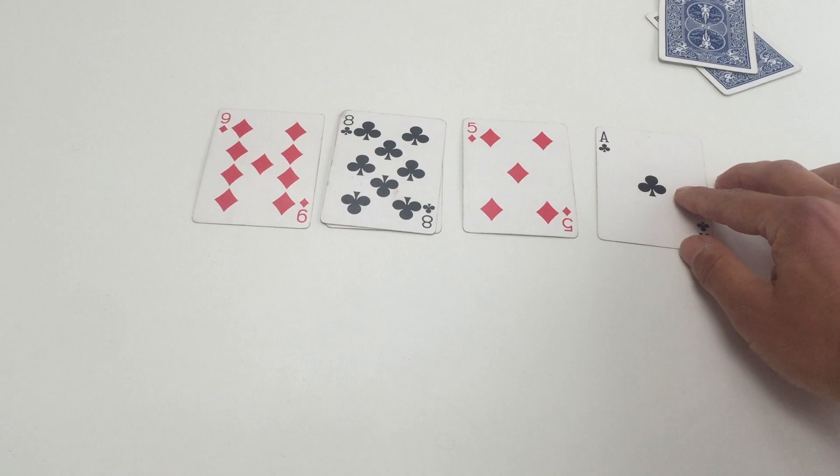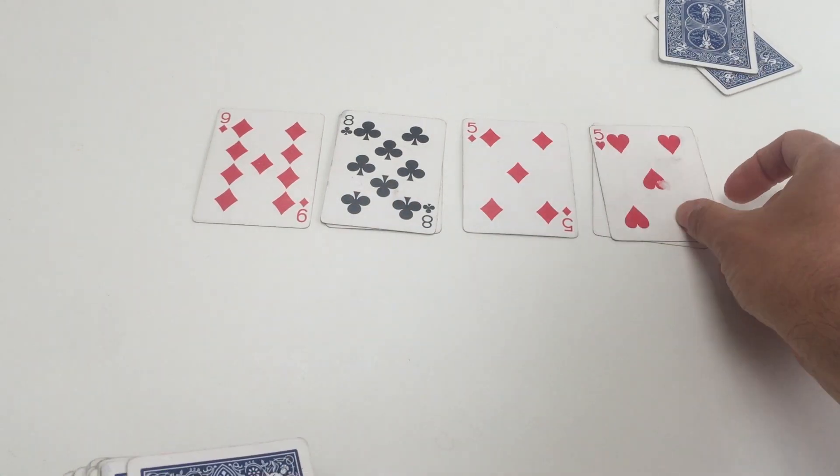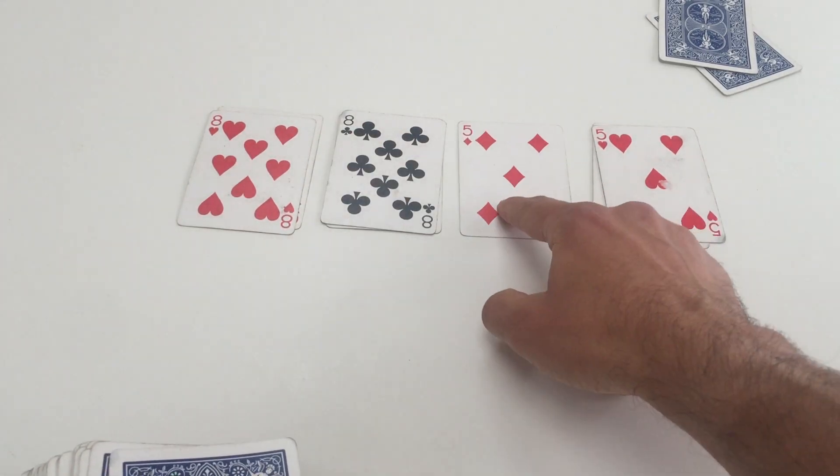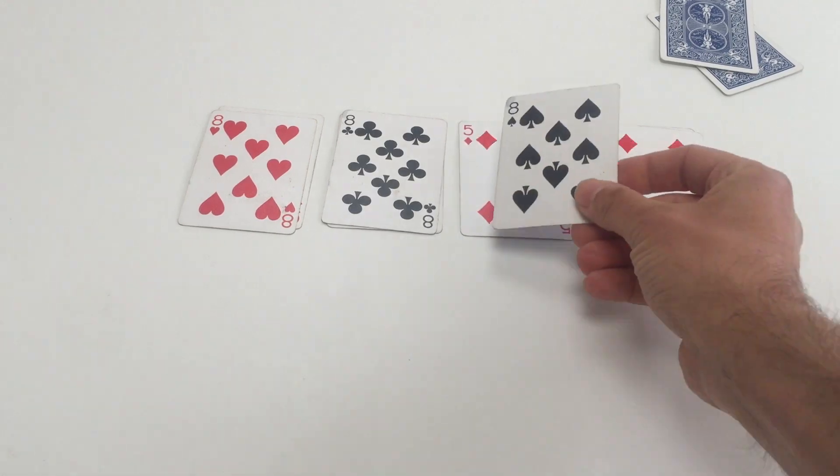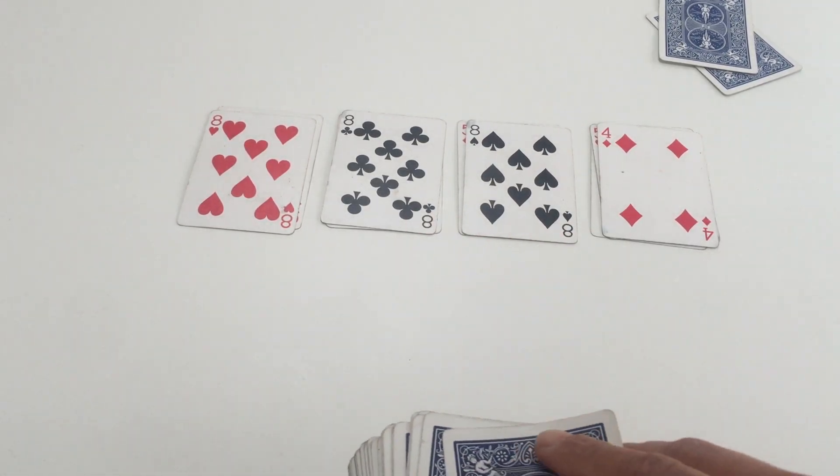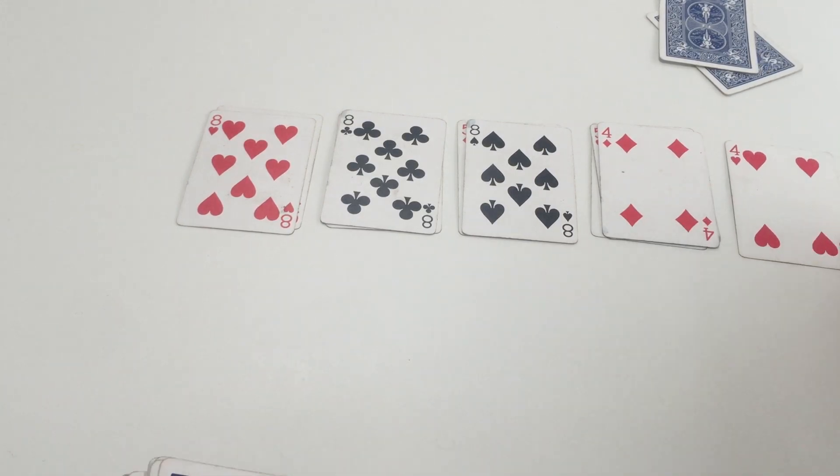In this case now we've got an ace and a nine so they add up to 10, so we put one on top of there, one on top of there. We've got a five and a five that add up to 10, so we've got a card on each of those. Now we haven't got any cards that add up, any two cards that add up to 10 there, so we'll start a new pile.